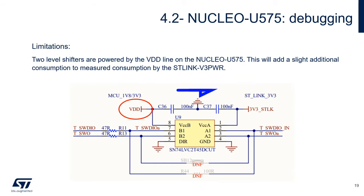There are certain limitations with this type of use. The Nucleo U575 has two level shifters used on the Virtual COM port and SWD interfaces, providing debugging capability when the MCU is powered by a 1.8V supply. These two level shifters are powered by the VDD line and are not disconnectable, which will add a slight additional consumption to the measurement captured by the ST-Link V3Power.